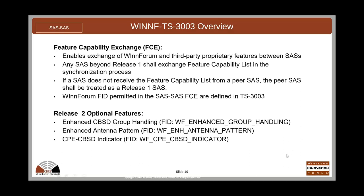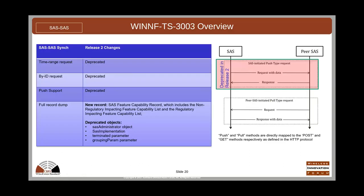For SAS to SAS synchronization procedures in TS-3003, the time range request, by ID request, and push support have been deprecated in Release 2 because they weren't being used by SAS admins. Only the full record dump — a pull type request — is now being used, and it has been enhanced to support the feature capability exchange.